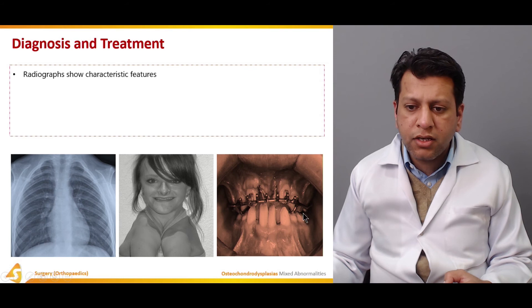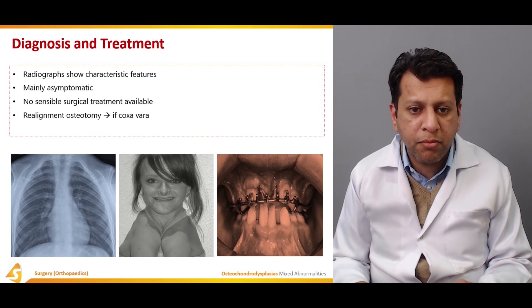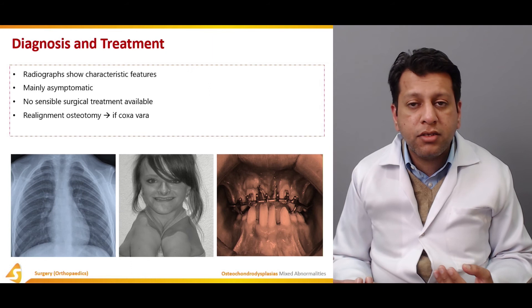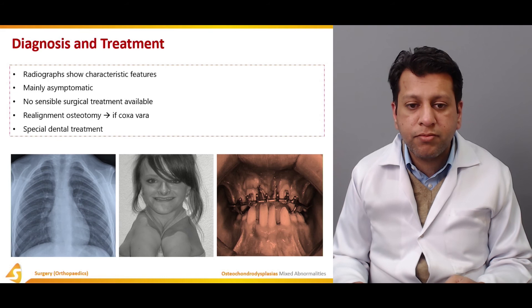Additional features include shortening of the middle phalanges, late closure of fontanelle, frontal bossing, Wormian bones, dental abnormalities with delayed eruption, and a really short neck. Cleidocranial dysplasia is mainly asymptomatic with no definitive surgical treatment available. Realignment osteotomy is performed only if coxa vara is present. The point is: if the patient does not have a clavicle, you cannot reconstruct it — treatment is directed only against specific complications such as coxa vara or malalignment, not against the disease itself.